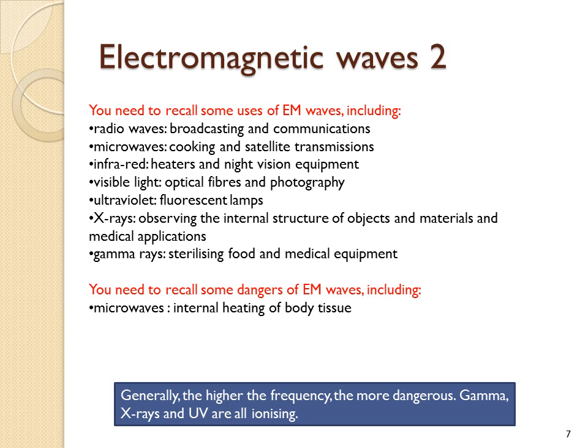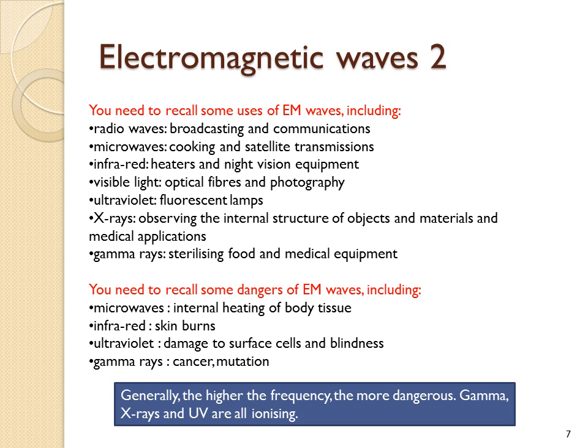And here are some dangers. Microwaves will heat your internal body tissue. They don't ionise though. Infrared can cause skin burns. It's also not ionising. Ultraviolet does damage to the skin surface cells and can cause blindness. And gamma rays can cause cancer and can mutate cells.